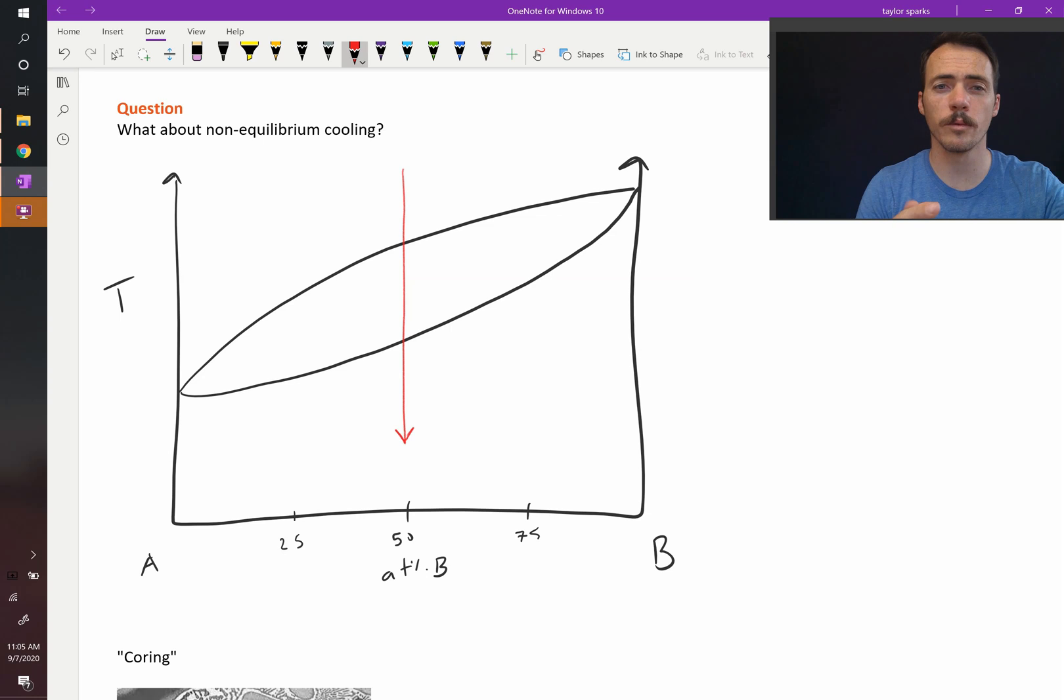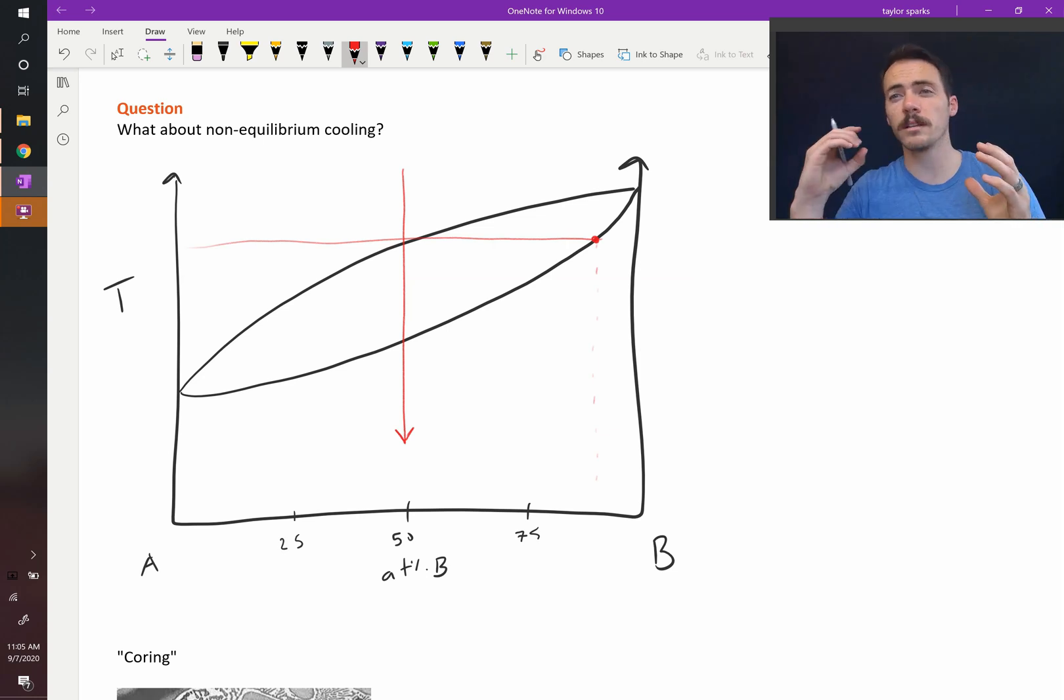Now what's going to happen when we reach this temperature? If we let it sit long enough, our very first solid will start to precipitate, and it will have a very different composition—way over here at more than 80 percent B. So from the liquid, which was an equal mixture of A and B, a bunch of the B atoms had to leave the liquid and condense into a mostly B solid, 80 percent B.